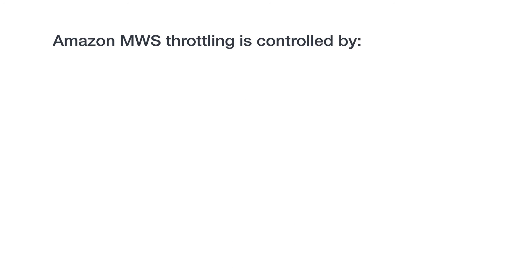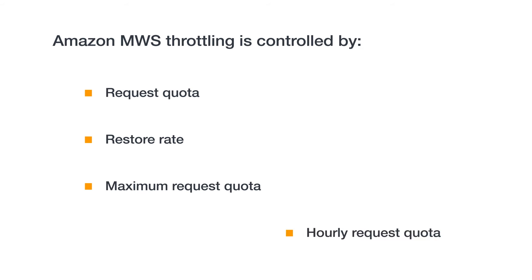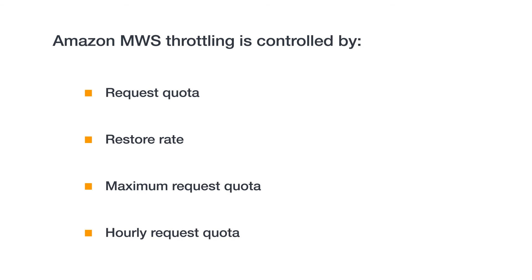Four rules control MWS throttling: the request quota, which is the number of requests you can submit at one time without throttling; the restore rate, which is the rate at which your request quota increases over time up to the maximum request quota; the maximum request quota, which is the maximum size the request quota can reach; and the hourly request quota, which is the maximum number of requests you can submit per hour.